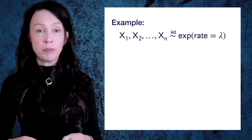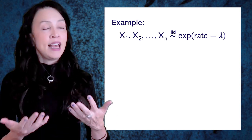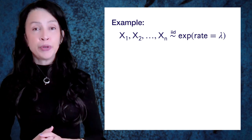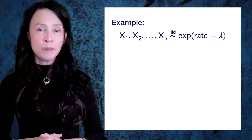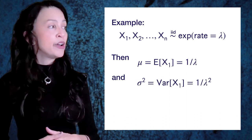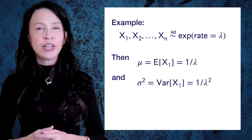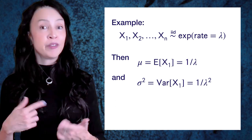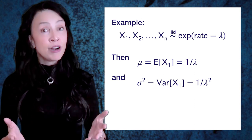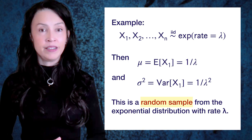Let's look at the exponential example a bit more. When you have independent and identically distributed random variables from a distribution, you denote that by writing X1, X2 through Xn with a squiggly line meaning 'has the distribution,' and you put the letters iid over that squiggly line - standing for independent and identically distributed. In this particular example, the mean for any one of these X's is 1/lambda, and the variance is 1/lambda squared. You may parameterize your exponential distribution differently, so watch out for that. This is known as a random sample from the exponential distribution with rate lambda - the phrase 'random sample' is equivalent to saying they are iid.